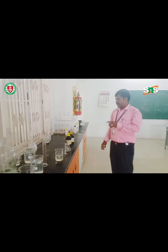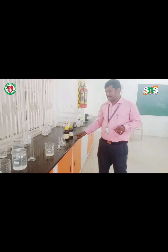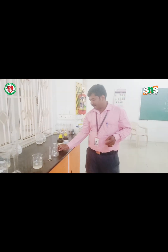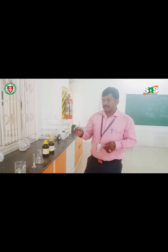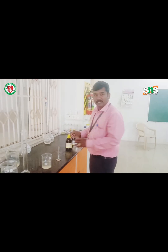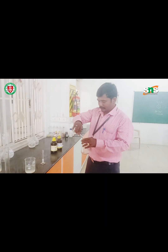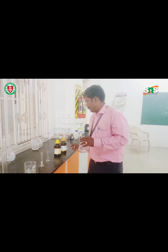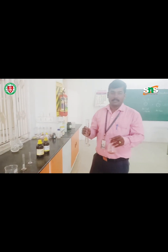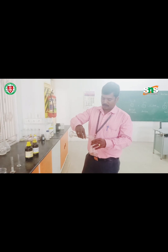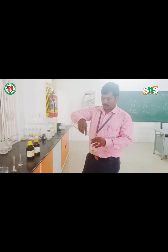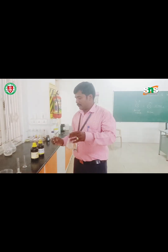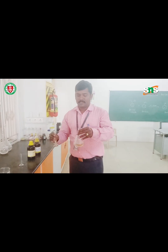As I have already mentioned, we require aniline, benzoyl chloride, and 10% sodium hydroxide for the synthesis of benzanilide. Now I have taken 2 ml of aniline and I am going to transfer this into the conical flask. Afterwards, I am adding 30 ml of 10% sodium hydroxide, which will act as a catalyst. Now I am going to add the benzoyl chloride.